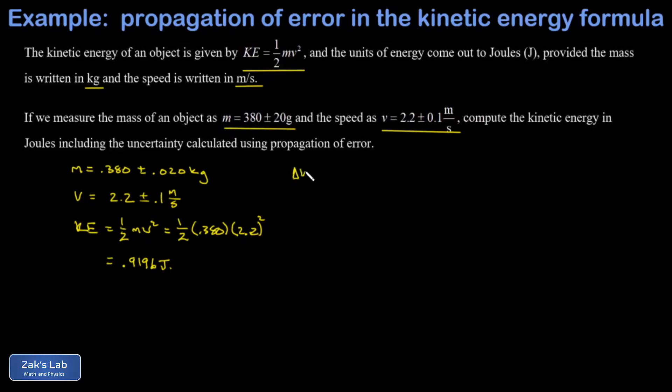We use a propagation of errors formula for this. If you're wondering where this comes from, I'll post a link to the video where it was first introduced. What I do is look at what measured quantities the kinetic energy depends on—that's the mass and the speed. But the speed is raised to the second power, so the mass term looks like this, and the way that exponent on v factors in is you have to put that factor of two out in front of the Δv/v before you square that term.